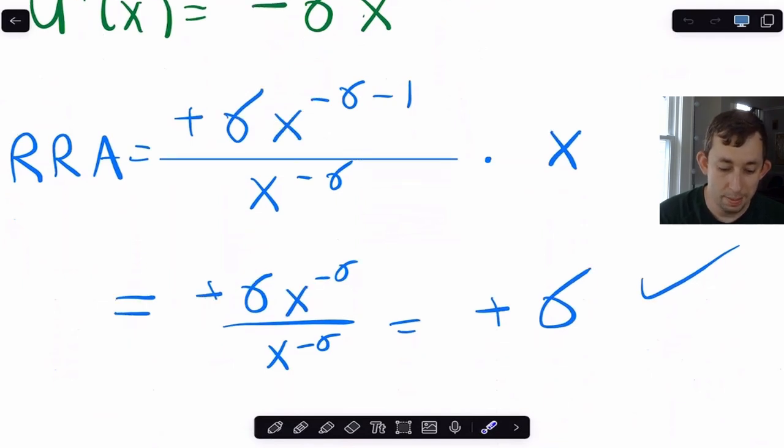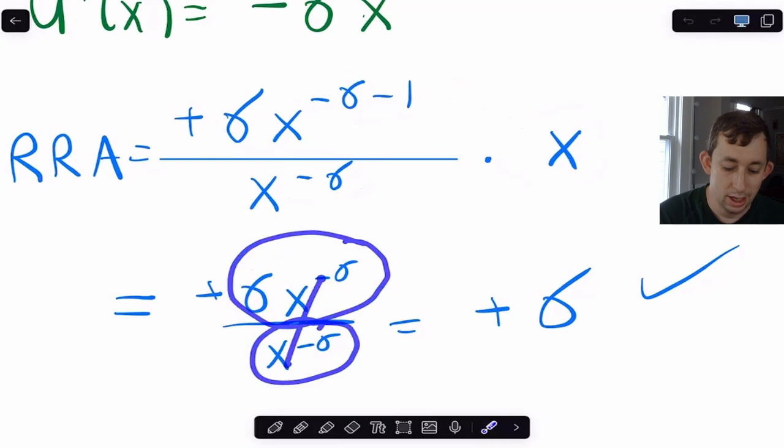So notice what's going to happen: I have this guy right here, and if I'm dividing it by this guy right here, multiplying it by x, then what I have is sigma x to the minus sigma over x to the minus sigma, these two cancel, and I just get sigma.